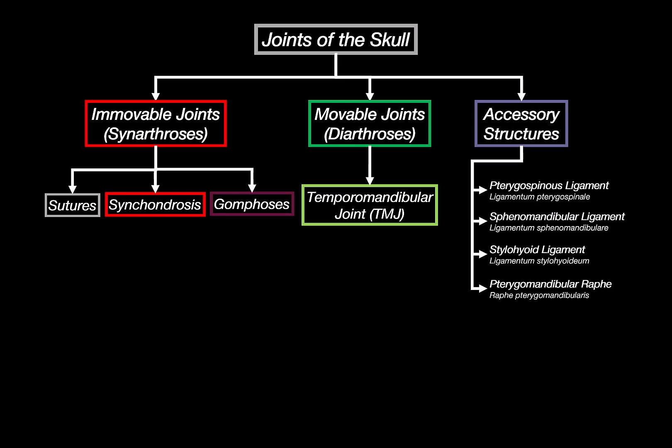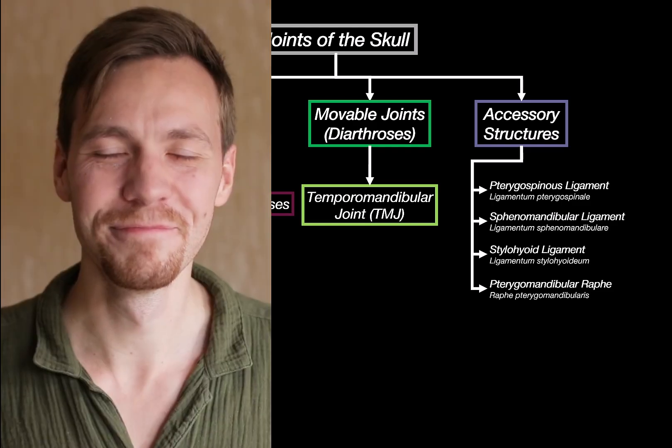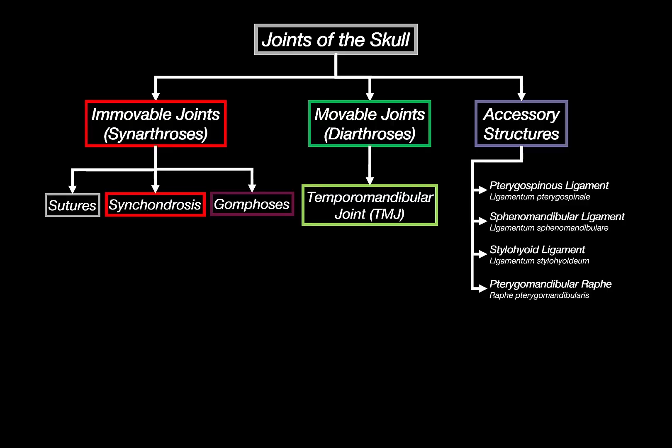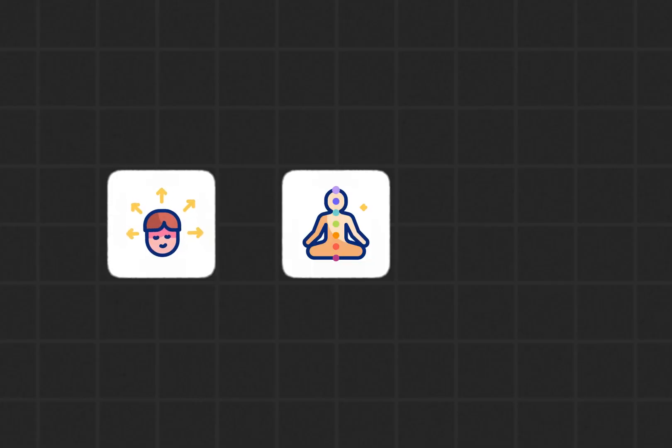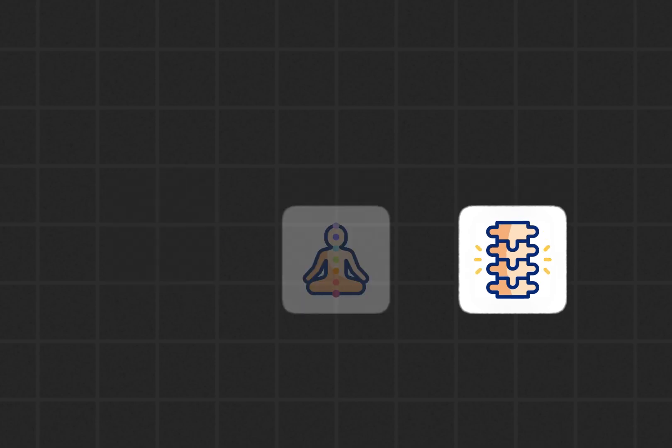Those are the main accessory ligaments associated with the skull — pretty fascinating how these tiny structures help stabilize the joints up here. But the skull doesn't move on its own; its ability to nod, rotate, and tilt comes from how it's connected to the bones of the spine, especially the cervical vertebrae. Click on the next video to understand how the head moves, how posture is maintained, and how the bones of the spine look.